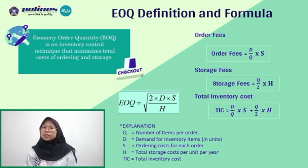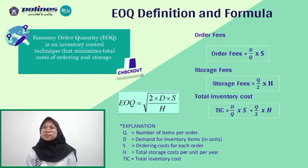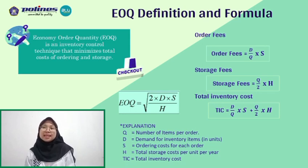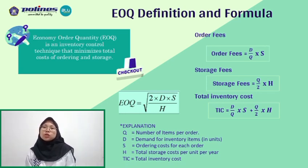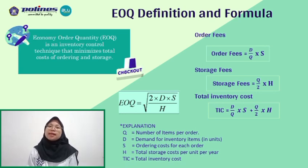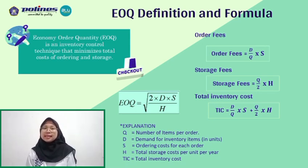What is EOQ? EOQ, or Economic Order Quantity, is an inventory control technique to minimize the total cost of ordering and storage. To find the EOQ, you need to calculate using the following formula: First, look for ordering cost — ordering cost equals D divided by Q times S. Next, calculate the total inventory cost by adding ordering cost to holding cost. Finally, the EOQ value is the square root of 2SD divided by H. Here, Q is the number of items per order, D is demand for inventory items in units, S is the ordering cost for each order, H is the total holding cost per unit per year, and TIC is the total inventory cost.